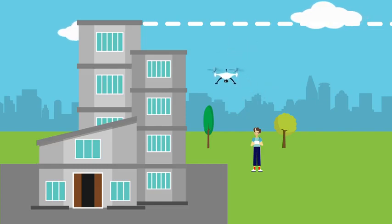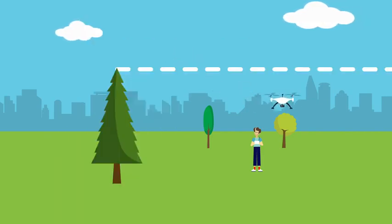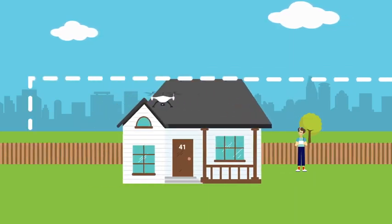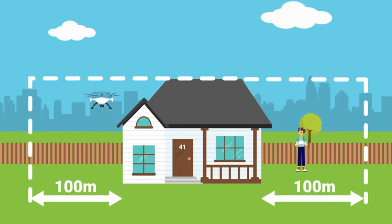The shielding object could be a building, a tree, or even your house. You must only fly your drone within a 100 metre zone around that object and never above the object's height.